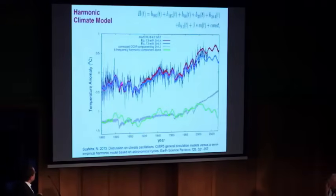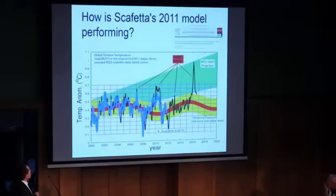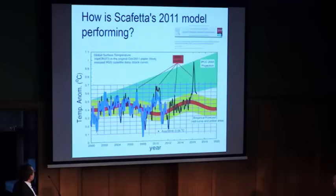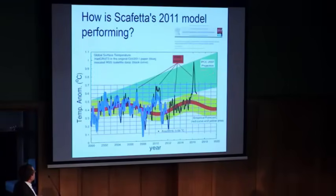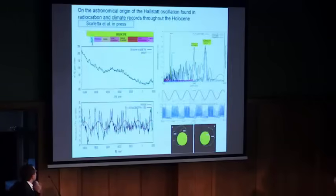This is a zoom of the same model — you can see better how the oscillations reproduce very detailed variation in the temperature. This is my prediction from 2011. My model was published when the data were at a certain point, and then I produced this prediction. The IPCC projections went up significantly. It seems that my model is performing much better than the IPCC projection.